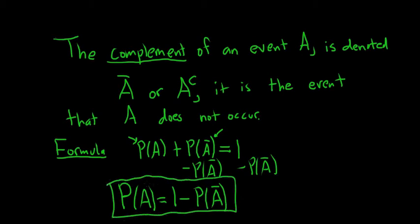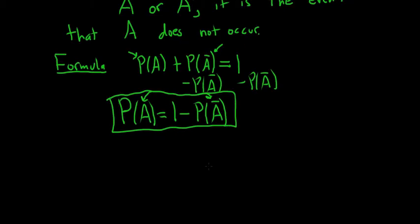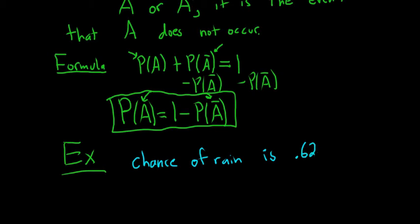And likewise, you can replace this with A complement and then this with A. Okay, let's do a simple example. How about say someone tells us that the chance of rain is 0.62%. So 0.62%.